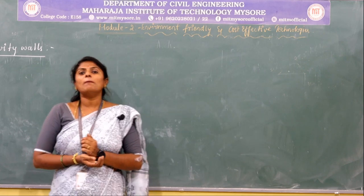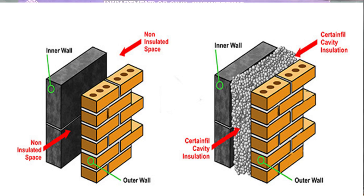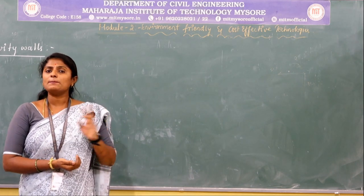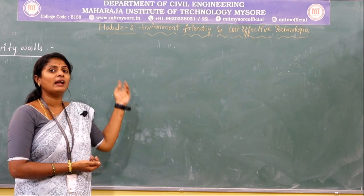After knowing about cavity walls in brief, let us see the figure. The figure shows two different types: the first represents cavity walls without an insulating material, where the hollow space is non-insulated, consisting of an inner wall and outer wall. The second figure shows the same cavity wall but with the internal space filled with cavity insulation.